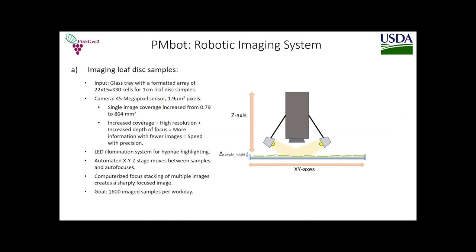For imaging leaf samples, we use a camera with a 45-megapixel sensor where a single pixel represents about 1.9 square micrometers. We've recently been able to capture an entire leaf disk in a single image. By increasing coverage and depth of focus at high resolution, we get more information with fewer images — the key driver for speed while maintaining precision. LED lights illuminate the hyphae, an XYZ stage moves between samples and autofocuses, and focus stacking software compresses multiple images into a single sharply focused image. Our goal is 1,600 image samples in a nine-hour workday.